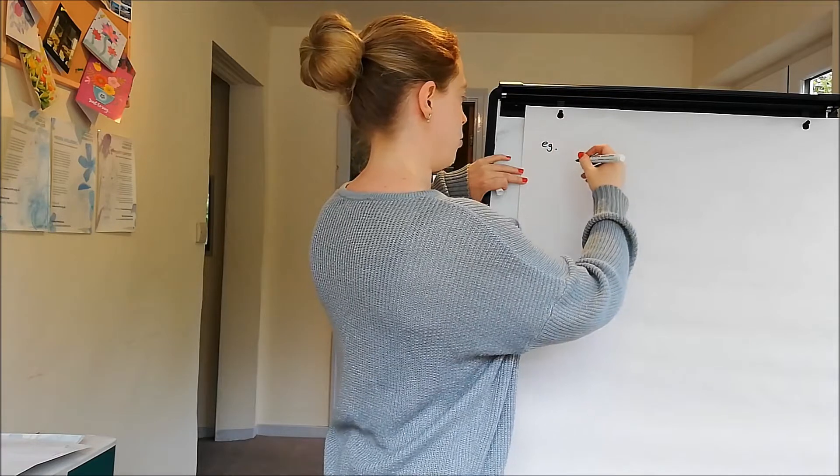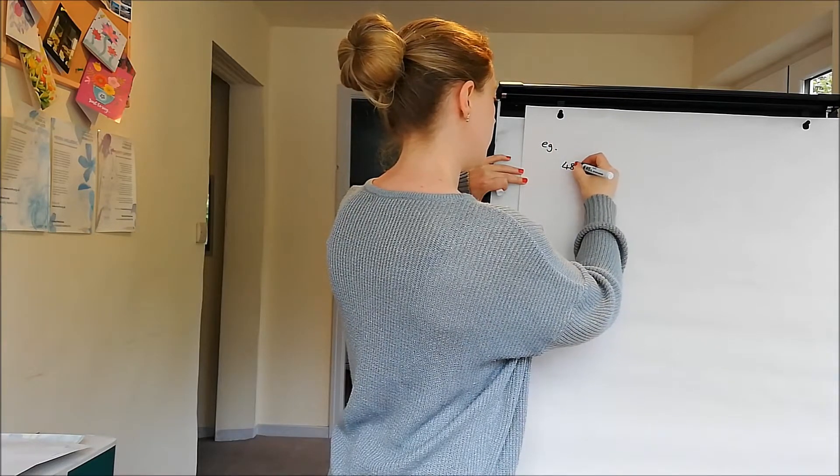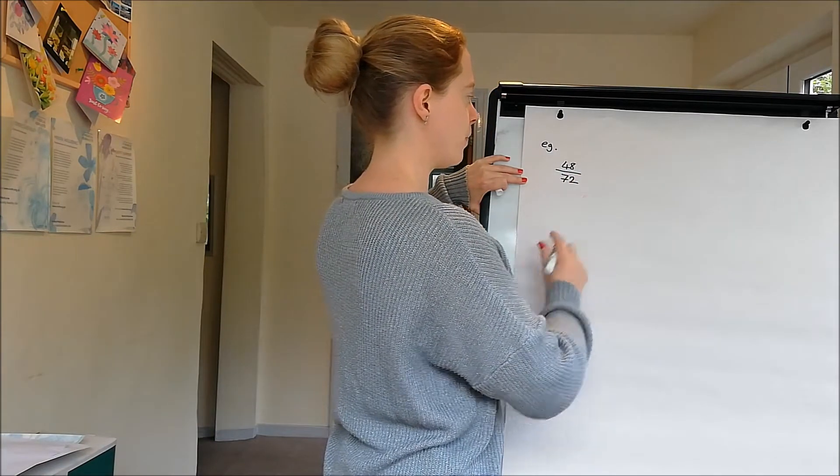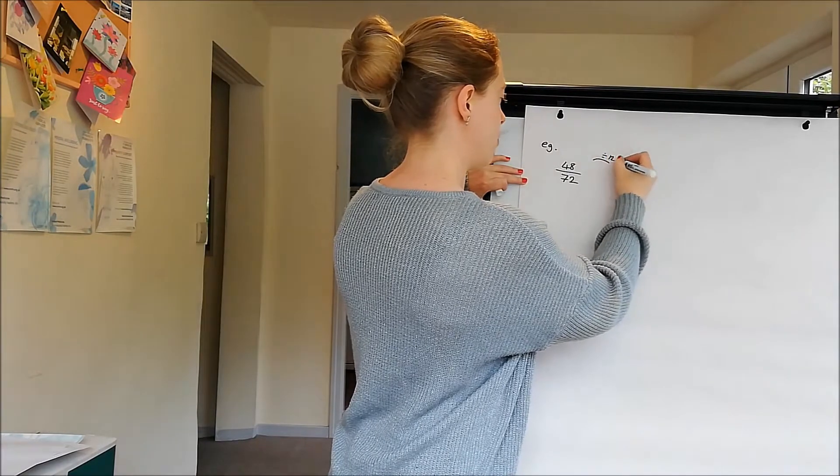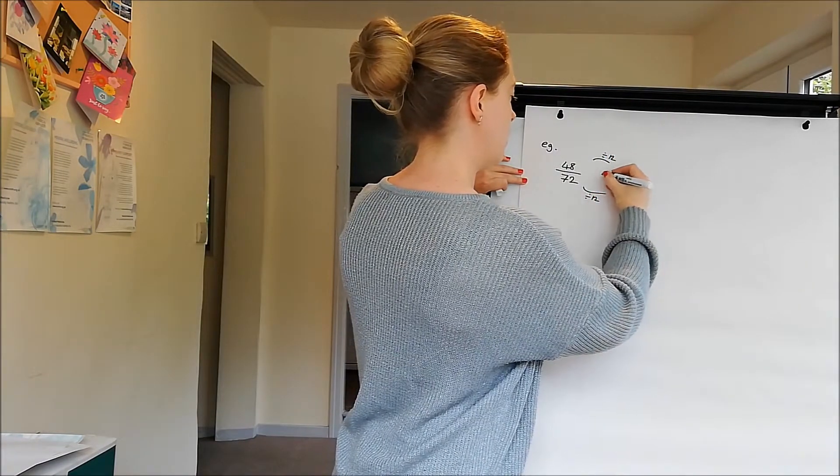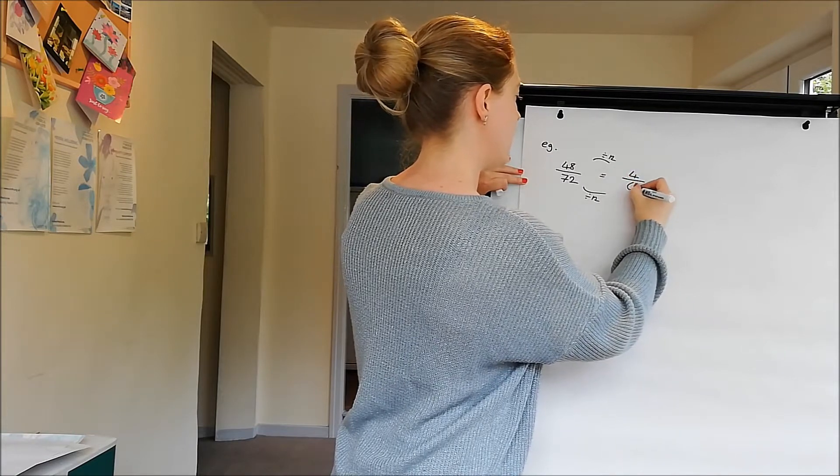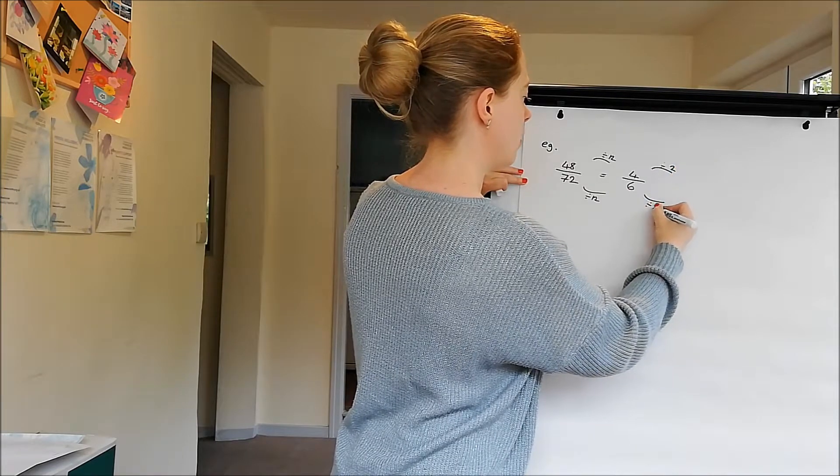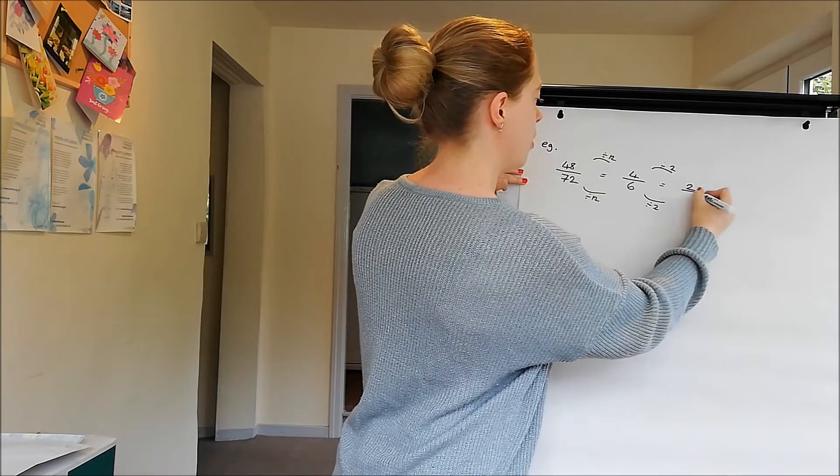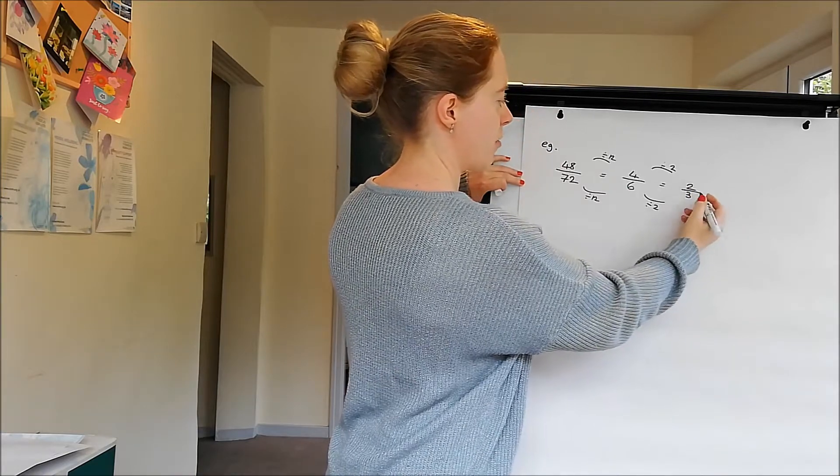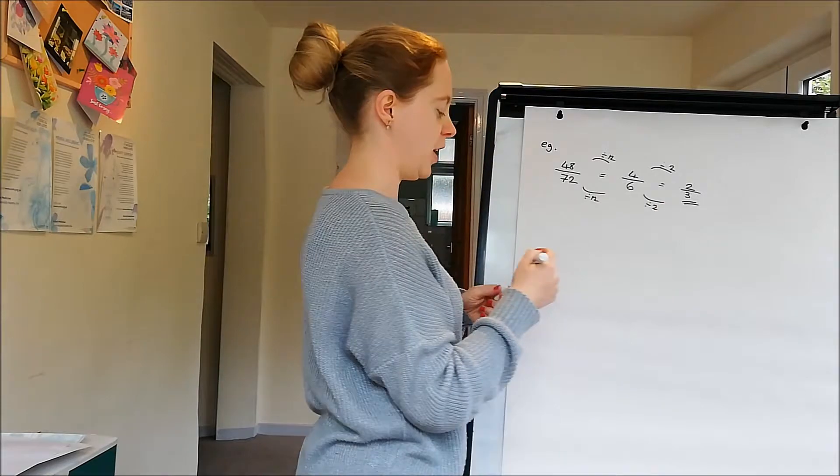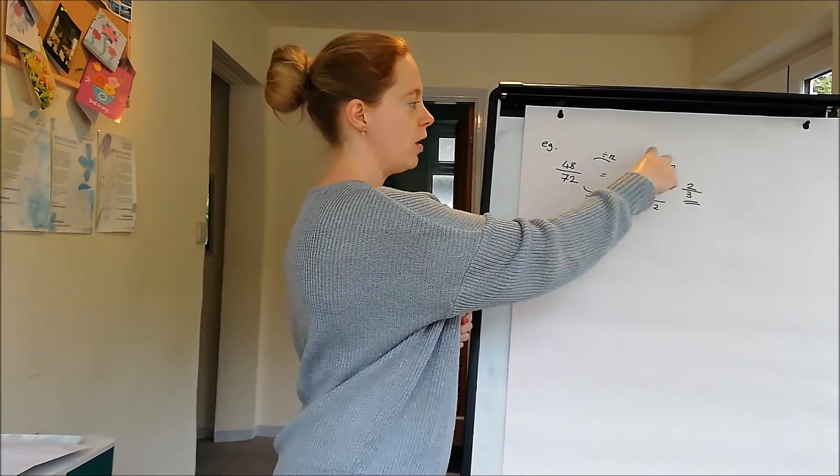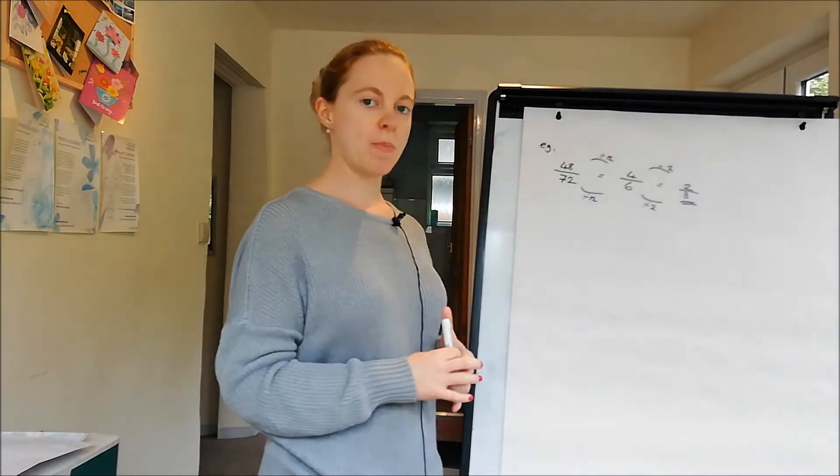For example, 48 over 72. Each of those will divide by 12 to give us 4 over 6, and each of them will divide by 2 to give us 2 over 3. 2 and 3 don't have any factors in common so then I've finished cancelling down. Just keep dividing top and bottom by the same number until there's no more same number that they both divide by.